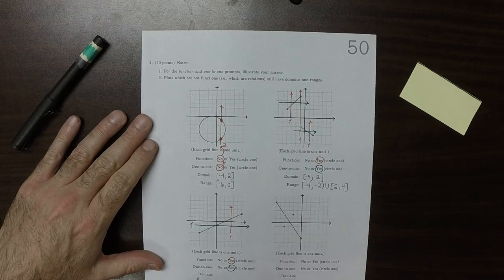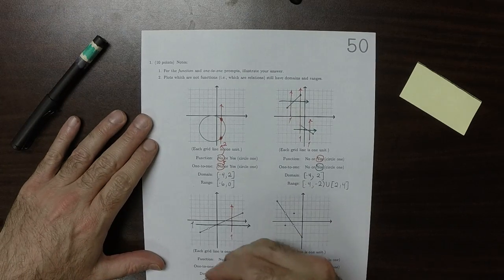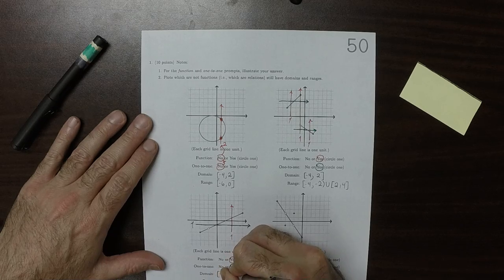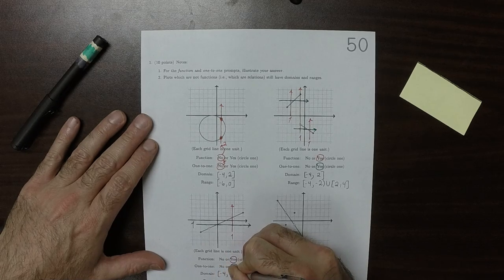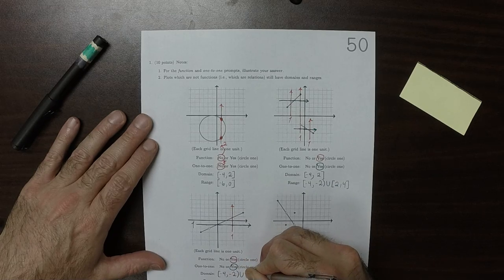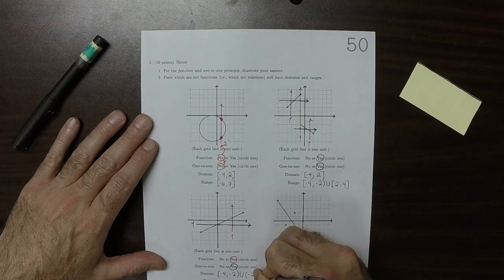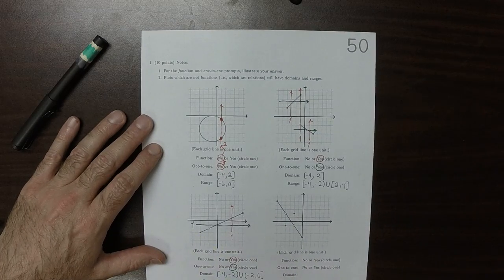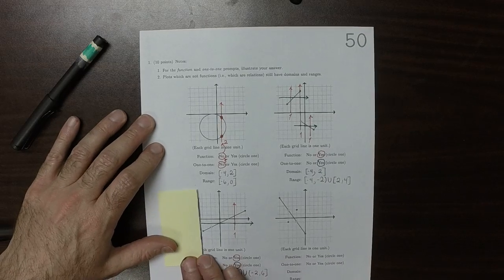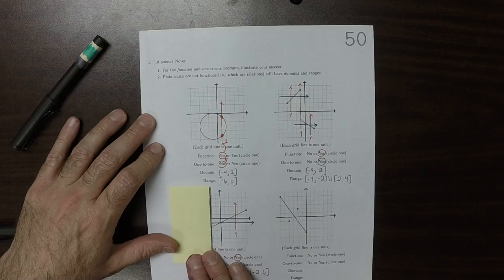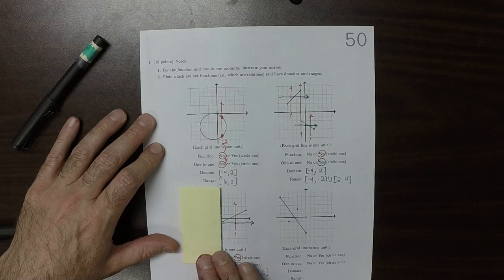The domain, so that would be from negative four to negative two, open, and then union negative two to six, closed, because negative four to negative two, open, and then negative two, open, to six.